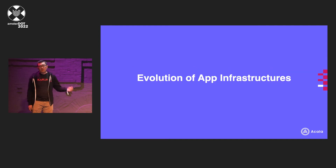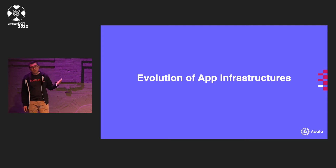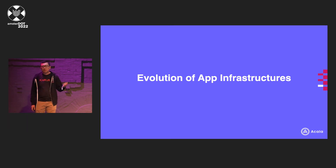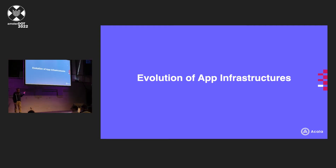Let's start with the infrastructure side — basically where the applications are running on. For simple Web2 applications, that just means servers on the internet, or just computers where the applications are running on. And then for Web3 applications, we have blockchains, smart contract platforms, things that use smart contracts or runtime applications, et cetera, running on.